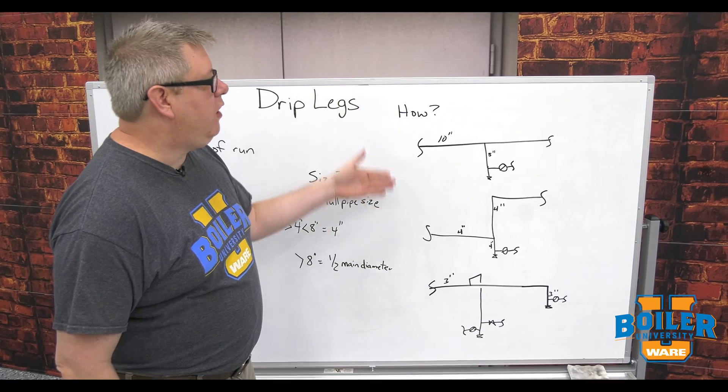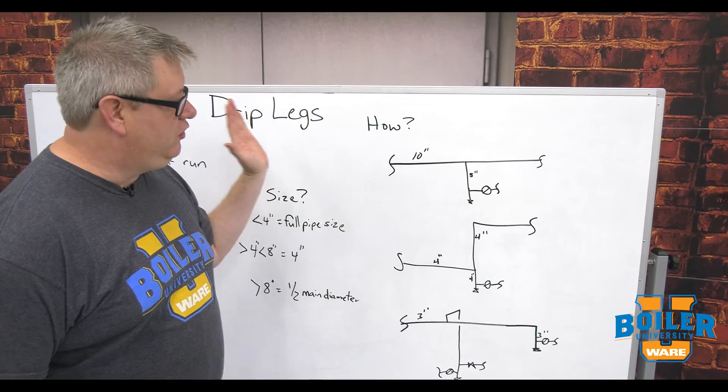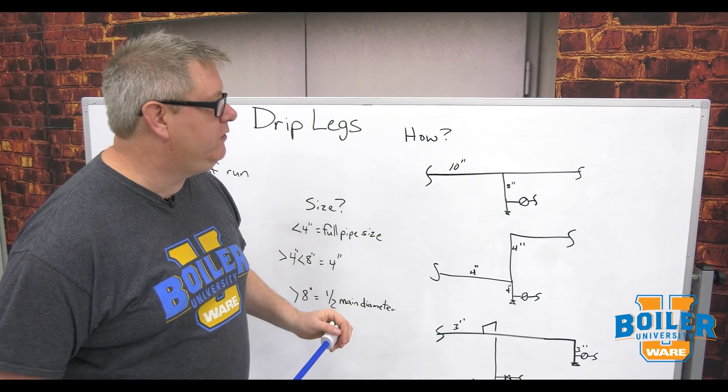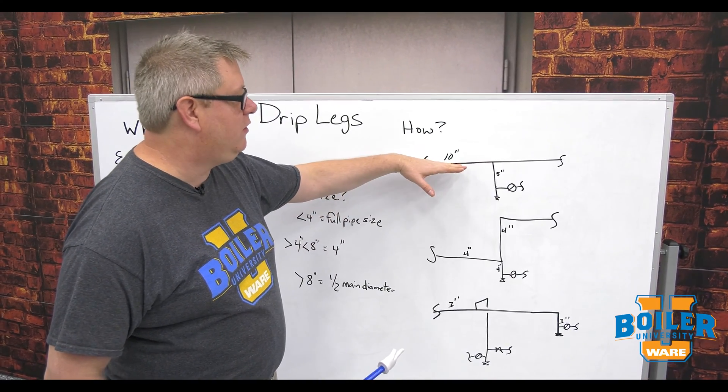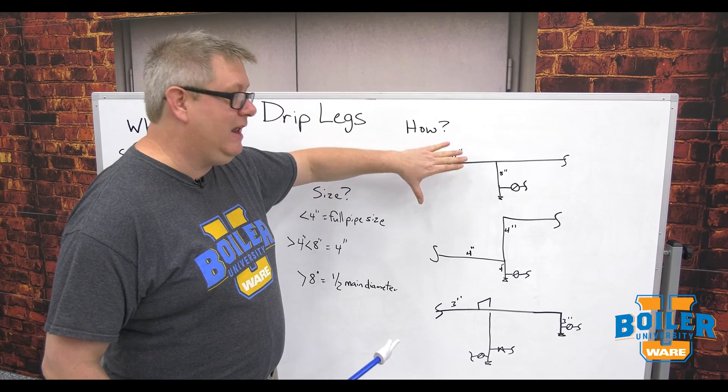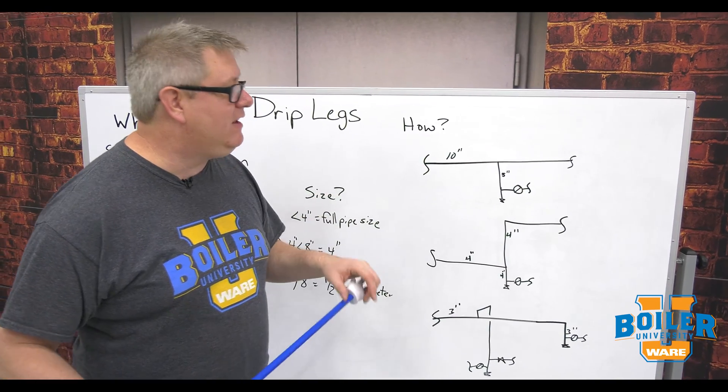So how are we going to install the drip legs? If I've got a horizontal run, one of those 200-foot interval portions, I'm going to look at my main line size. In this case it's 10 inch, so I'm not going to use a 10-inch drip leg, but I'm going to use half of that diameter.